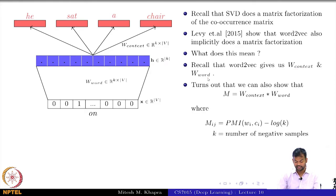Recall that word2vec gives us W_context and W_word. They say that there exists a matrix M such that it is the product of two matrices - W_context transpose W_word. It's actually a product of these two matrices that you have learned.